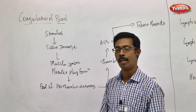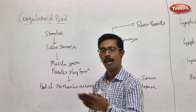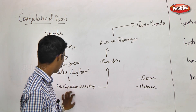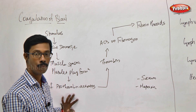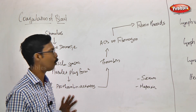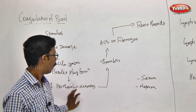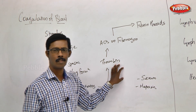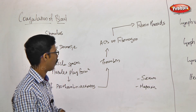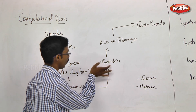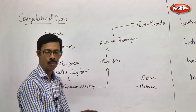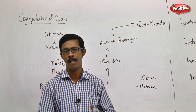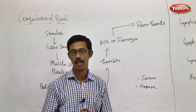Prothrombin is a major clotting factor in inactive form, which gets converted to its active form. That is the first stage — activation of prothrombin, converting inactive prothrombin into active prothrombin. The active prothrombin then converts fibrinogen. We are talking about prothrombin and fibrinogen as major plasma proteins.